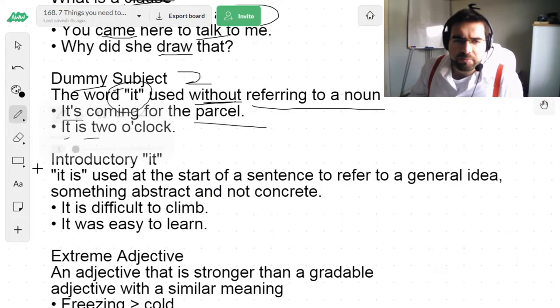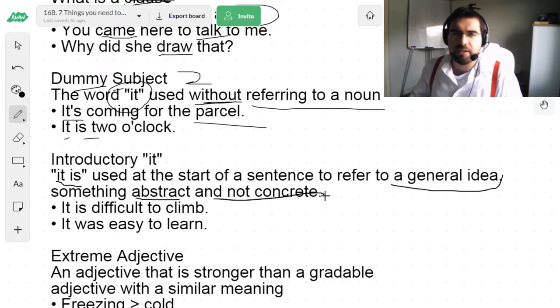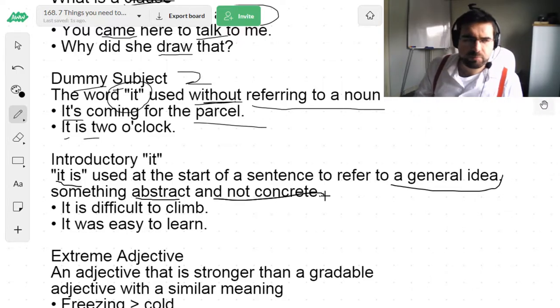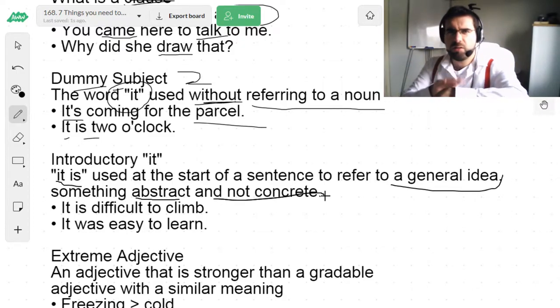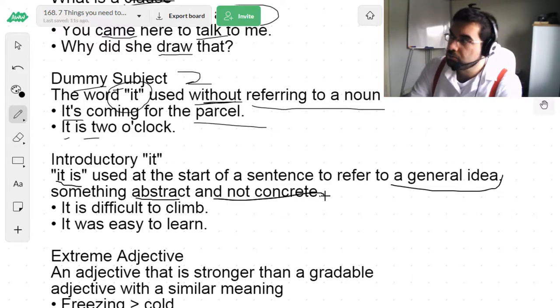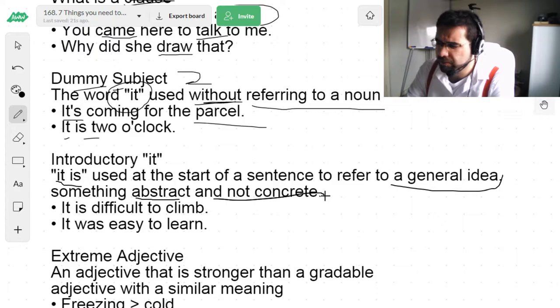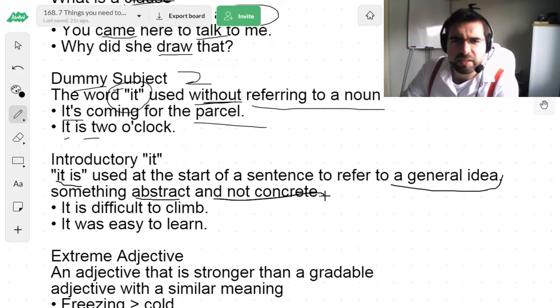The introductory it. It is used at the start of a sentence to refer to a general idea, something abstract or not concrete. We could say, it is heavy. What's heavy? It is long. What's long? It's tall. What is? The dog. The wall. The person. It's weird. What's weird? It's a bit short, isn't it? What is?